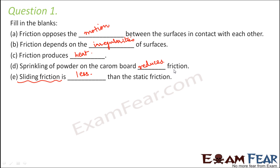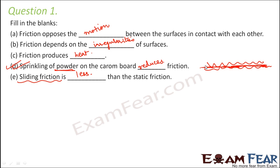Now one more thing to mention here: friction happens due to irregularities of surfaces. Suppose this is one surface and this is another surface. When you apply something to reduce friction — for example, powder on the carom board — you are applying it in between the two surfaces. So the interlocking effect reduces. Earlier the two surfaces were directly in contact and well interlocked, so friction was high. Now with powder, oil, or grease in between, interlocking reduces and therefore friction also reduces.